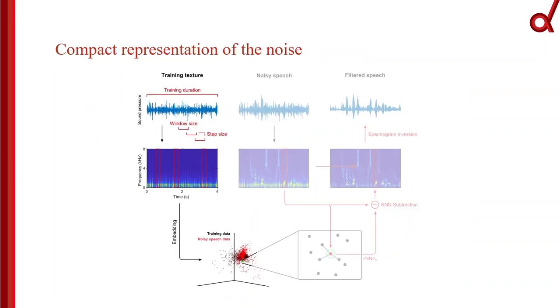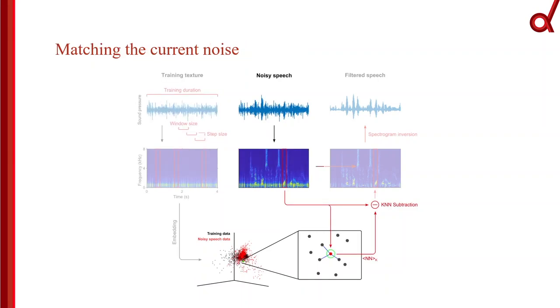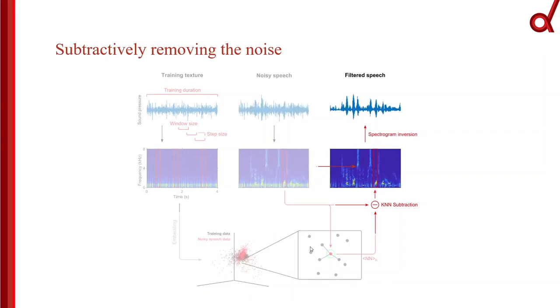During the training stage, we create a library of spectrotemporal features of the background noise using a k-dimensional tree representation. We obtain this training data from the user in a supervised mode or extract it automatically using voice activity detection. Then we find the best matching noise fragments and subtract it from the original mixture to yield clean signal.